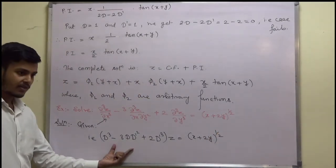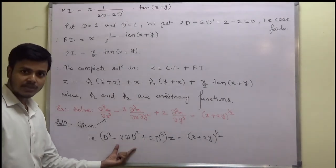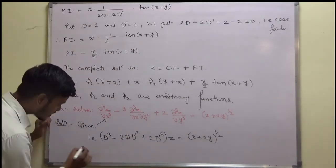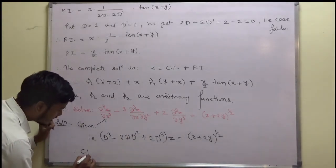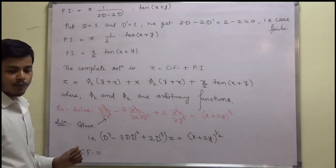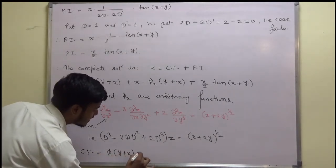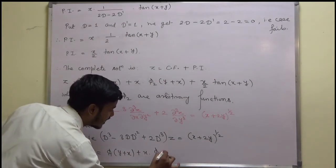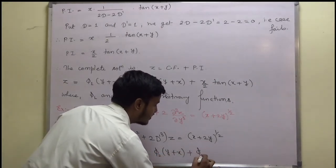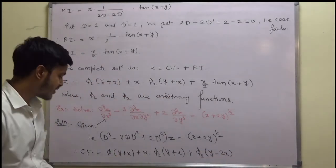You can find the complementary function on your own. The roots are 1, 1, -2. So the complementary function is phi_1(y + x) + x · phi_2(y + x) + phi_3(y - 2x).